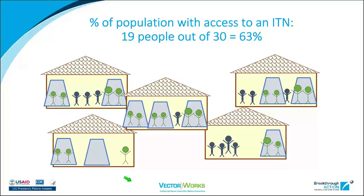When we look at the population access indicator — the percent of the population with access to an ITN, assuming each net protects two people — we can think of this as the proportion of the population that could use an ITN. For example, in the first house with two nets and seven people, each net protects two people, giving four potential net users out of seven. So four divided by seven is 57%, and each individual in that household is assigned a value of 57% access in the dataset.